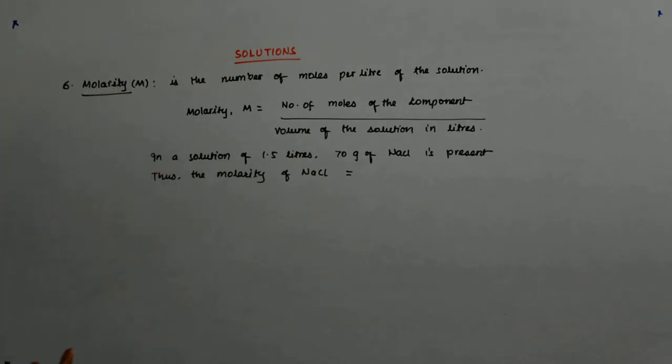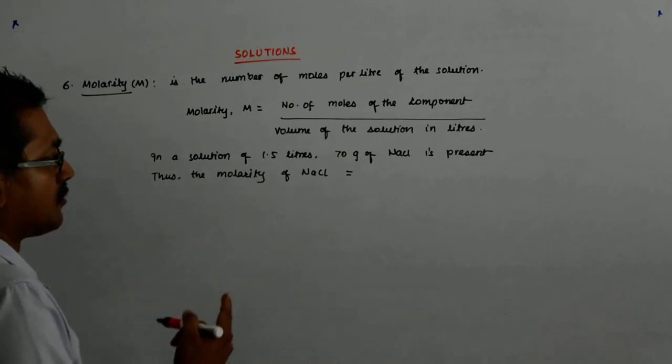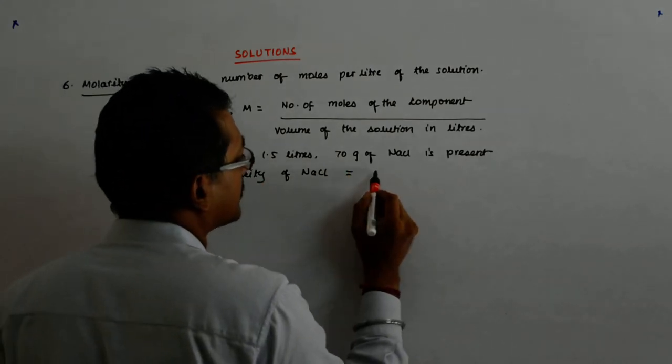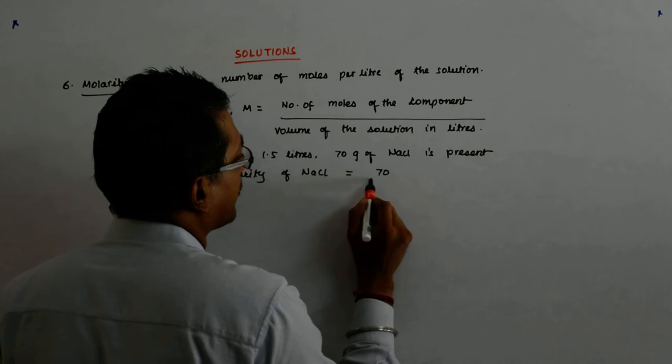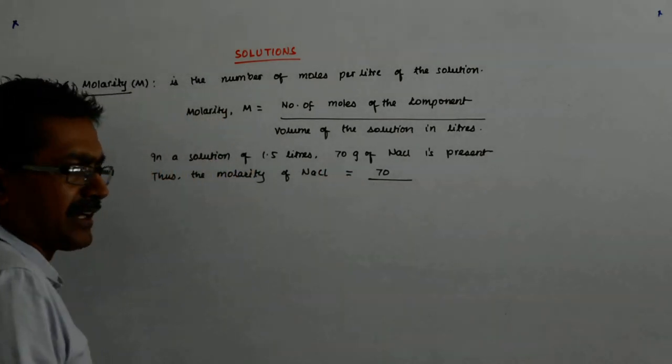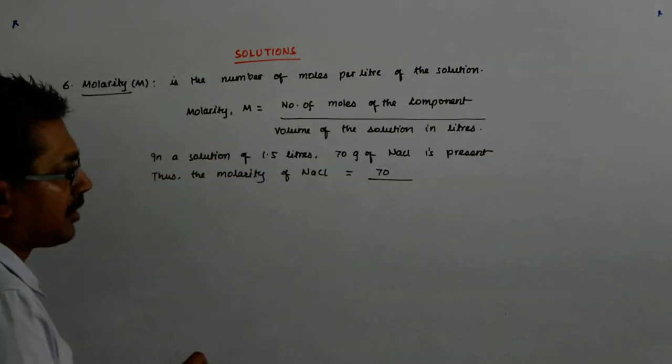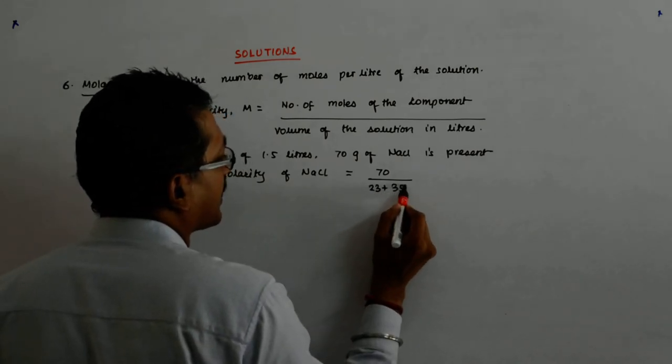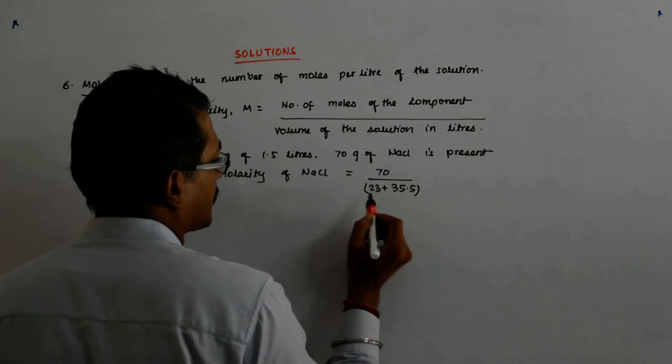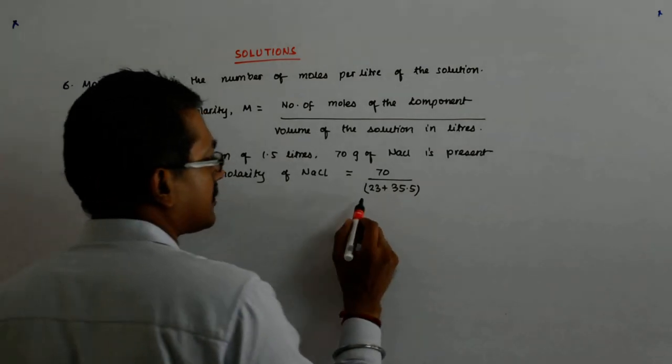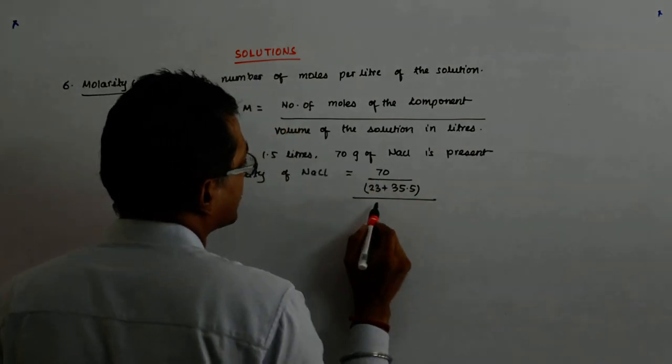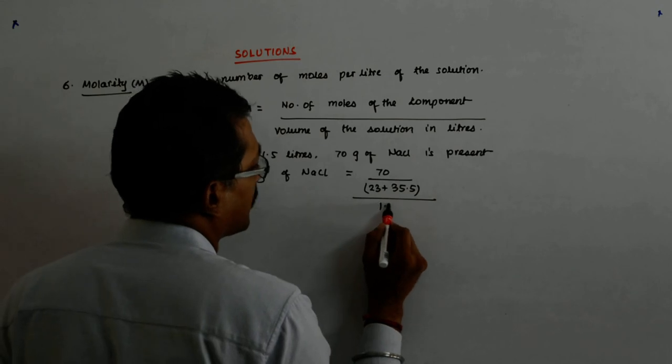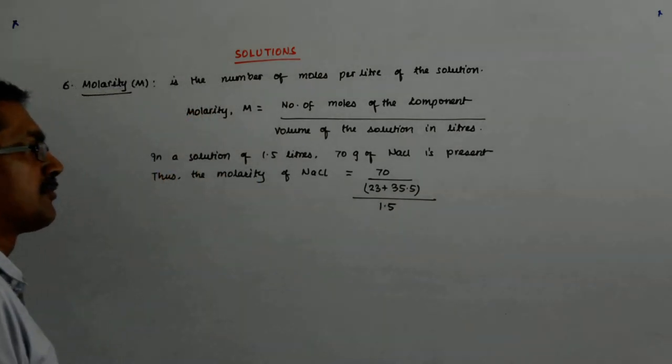What is the gram molecular mass of NaCl? How many moles am I trying to calculate? What is the gram molecular mass? So 70 divided by how many moles of NaCl is there? 70 upon 58.5 divided by 1.5 liters of solution.